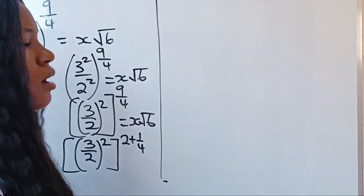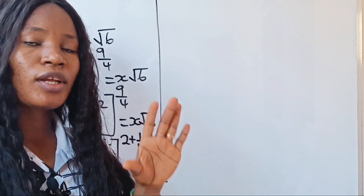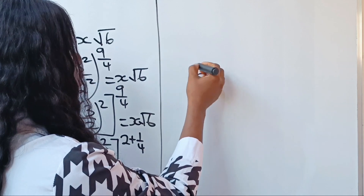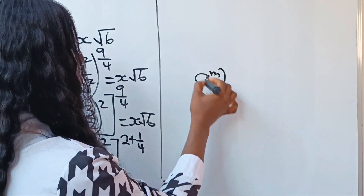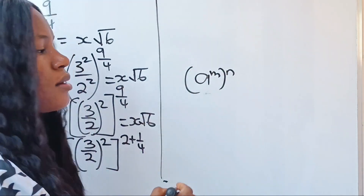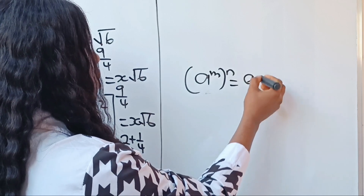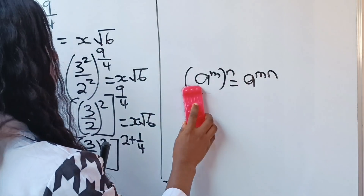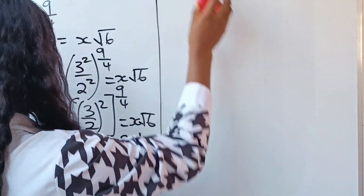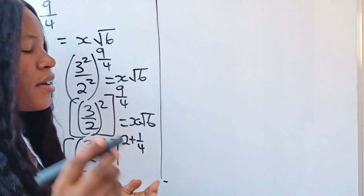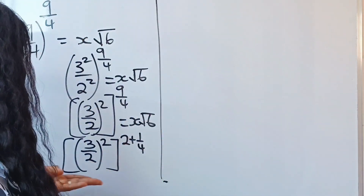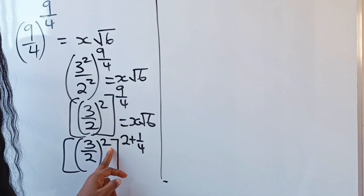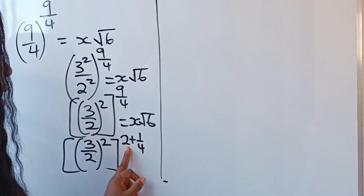Let's proceed. Recall the law of indices that states that a raised to the power of m, raised to the power of n, is equal to a raised to the power of m times n. Now let's relate this to what we have here — this tool is to be used to multiply the exponents together.